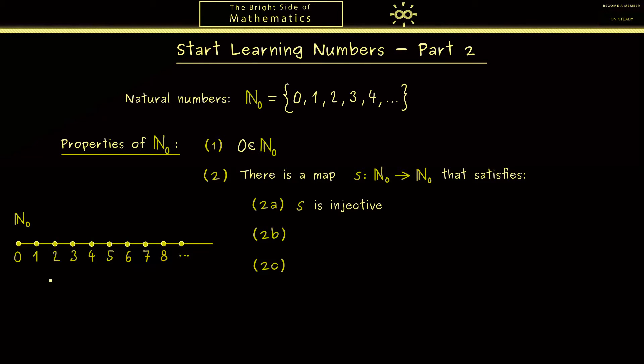What you should also see here is that 0 is not a successor for any natural number. One possibility to write that down would be saying that 0 is not in the range of s. Please recall the range is just the image of the whole domain, namely of N₀.